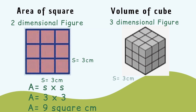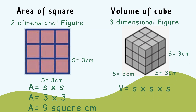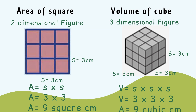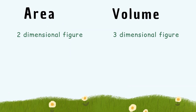For the volume of the cube, one side measures three centimeters, so the volume is equal to s times s times s, or three times three times three, giving us nine cubic centimeters. We can also derive the formula for the volume of a rectangular prism from the formula for finding the area of a rectangle.